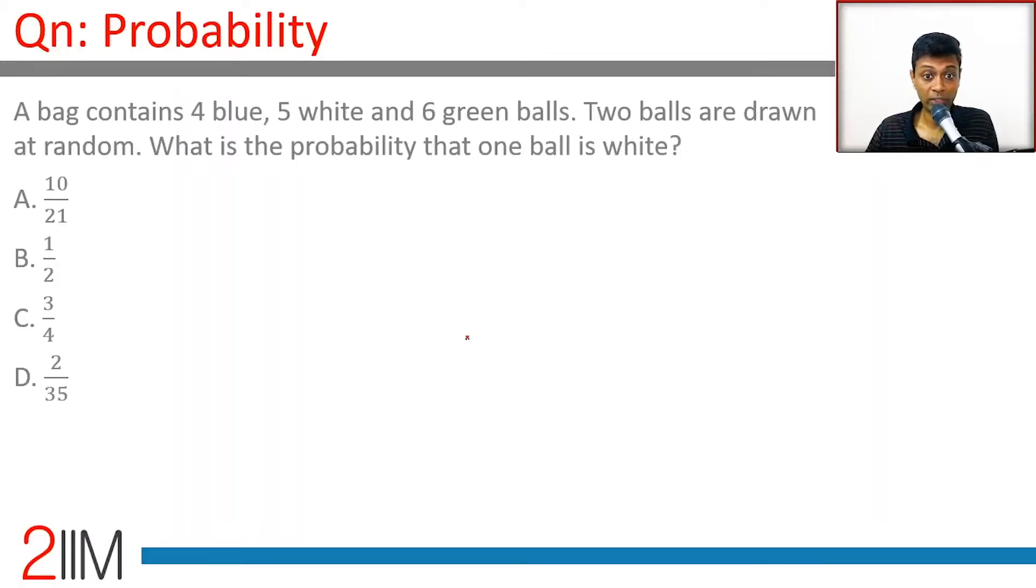A bag contains 4 blue, 5 white, and 6 green balls. Two balls are drawn at random. What is the probability that one ball is white?